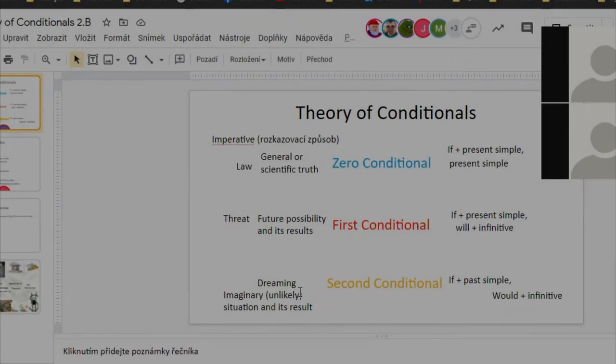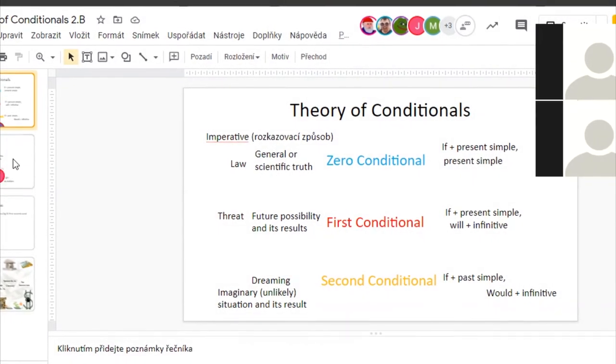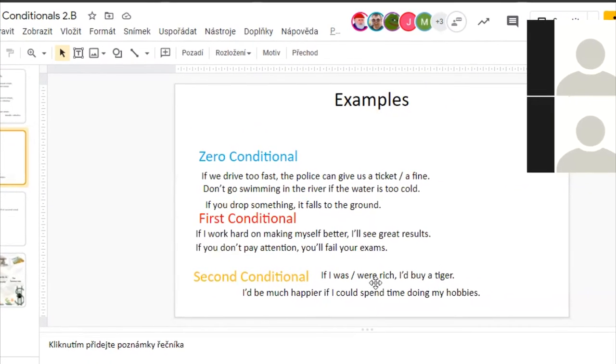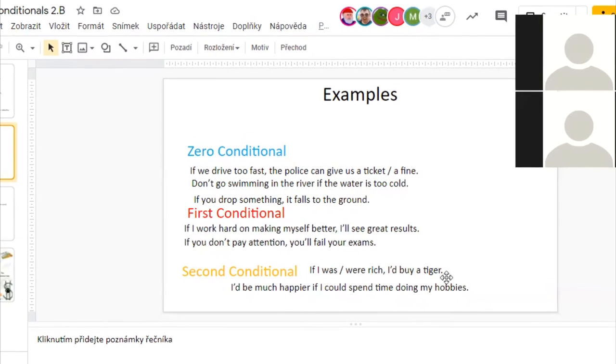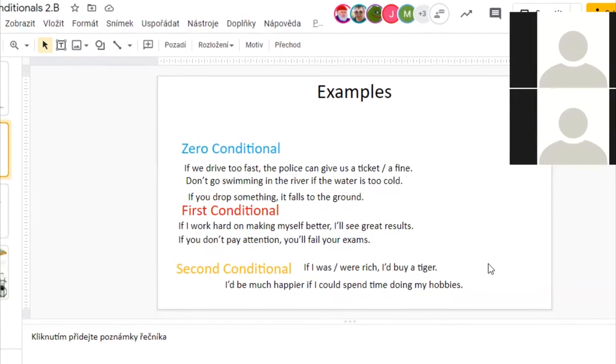Imaginary—I would say it's more of dreaming. Now I'm not rich now. I'm not rich and I want to be rich. I'm dreaming and I'm saying oh, if I were rich I would buy a tiger. Yeah, yes.